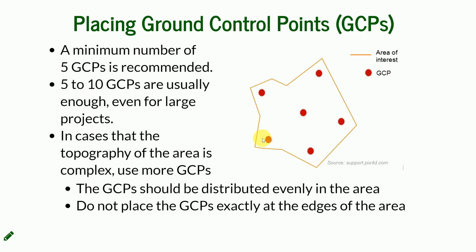An important note: do not place GCPs exactly on the edge of the mapped area. As you will see with the overlap, the biggest overlap is in the middle of the area. All of the area you want mapped will have higher overlap, but at the edges it can be just one or two pictures. If a ground control point appears on only two pictures, most software will not recognize it as a valid GCP — it needs to appear in as many pictures as possible.